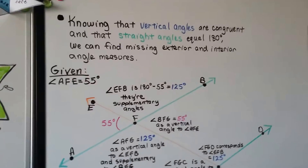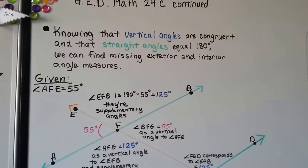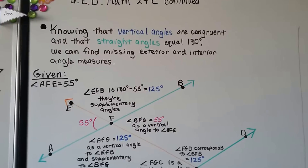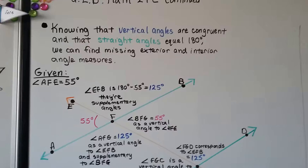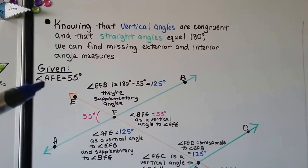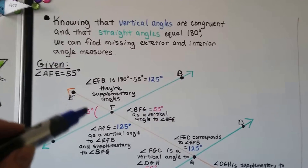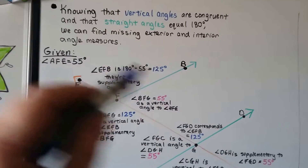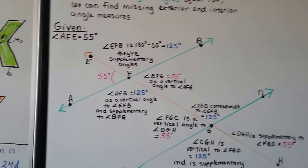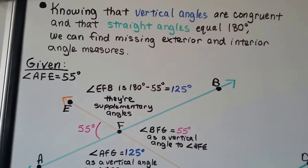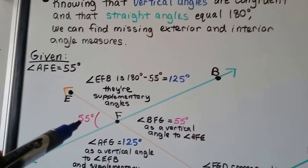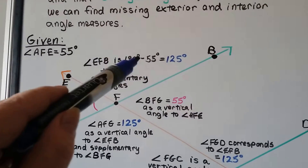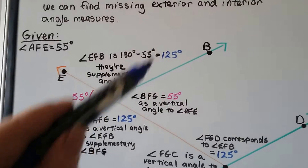Now I've got this really big drawing here. Knowing that vertical angles are congruent and that straight angles equal 180 degrees, we can find missing exterior and interior angle measures. It's given that angle AFE is 55 degrees, so this one is 55 degrees. If that's the only angle we had, we'd be able to find all the rest because vertical angles are congruent and straight angles are supplementary — they equal 180. So we can do 180 minus 55 and get 125 degrees.